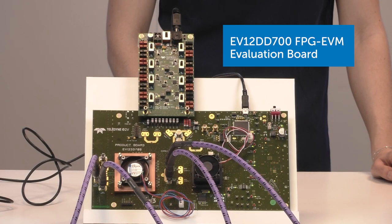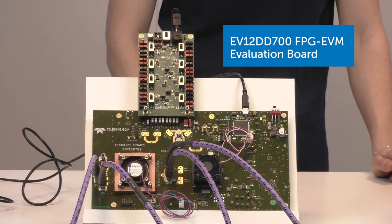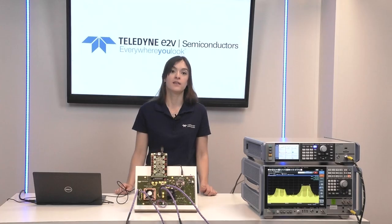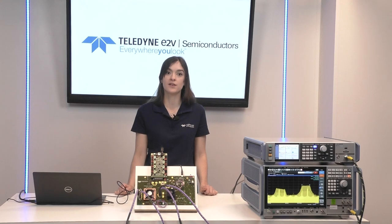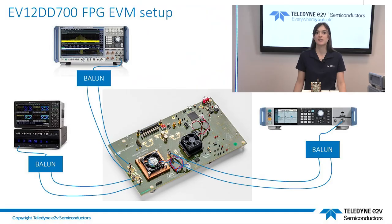Here is an overview of the evaluation board, giving access to the two DAC RF outputs and the GUI, allowing you to easily configure digital capabilities. In this video, I will give you all the information you need to get started with the EV12 DD700 evaluation board for chirp generation in C-band and in X-band using the graphical user interface.